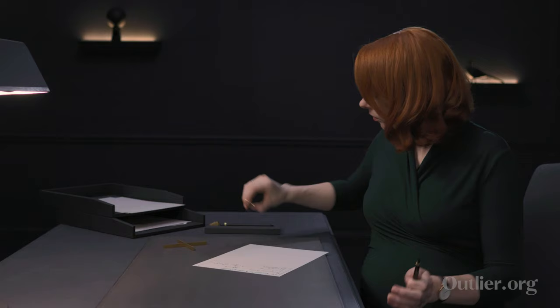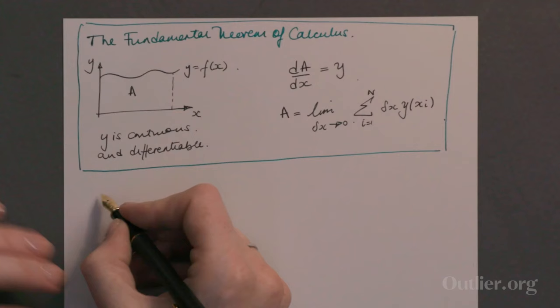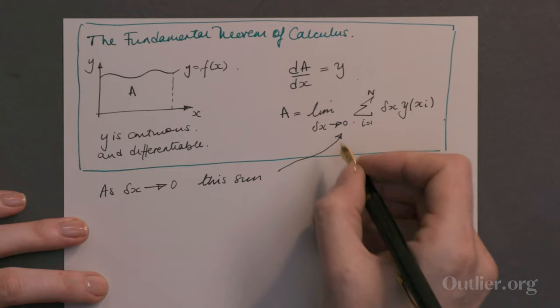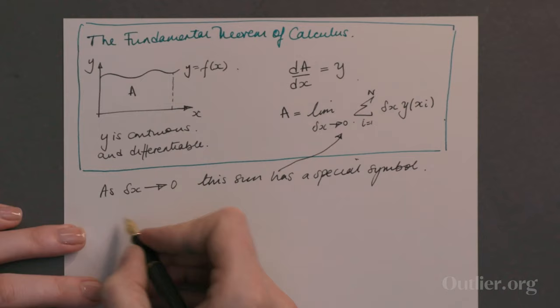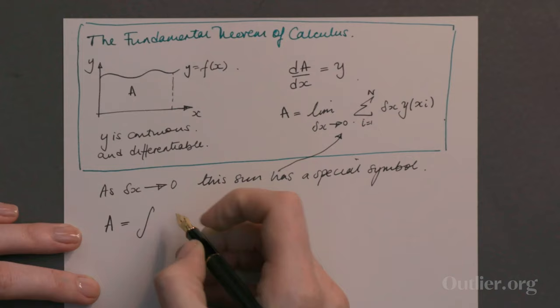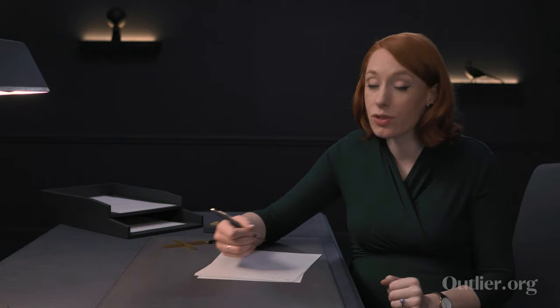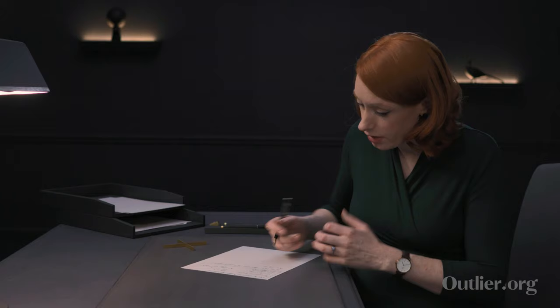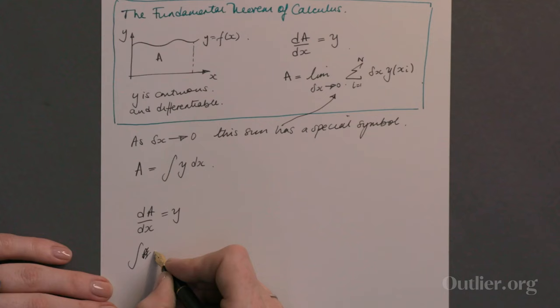We also know that A is equal to the limit as delta x tends to zero of the sum from i equals 1 up to n of delta x times y of xi. This is the big idea — something that links derivatives to the area underneath the curve. As delta x tends to zero, this sum has a special symbol of its own: it's called an integral, and it looks like this: A is equal to the integral of y dx. That little dx is a complete symbol illustrating that delta x, the size of your strip, tends to zero, and it tells you what you're integrating with respect to. So putting those two things together — dA by dx equals y, and the integral of y dx equals A — that's the partnership of differentiation and integration working together.